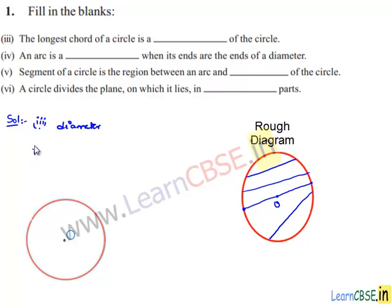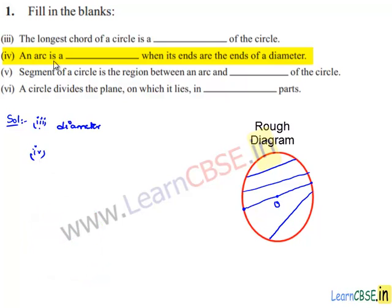Moving on to the fourth bit: an arc is formed when its ends are the ends of the diameter. Let us consider the figure. Let us name the points at the ends of the chord passing through the center as A and B. It divides the circle into two equal parts. Therefore, the arc formed by the chord passing through the center is nothing but a semicircle.